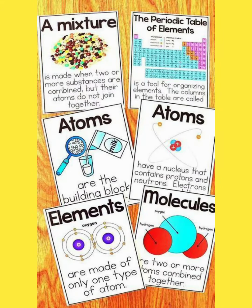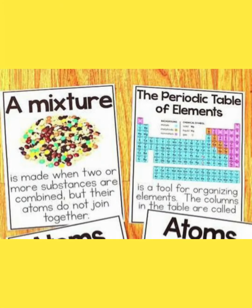Each and every matter is made up of 117 types of elements. The periodic table of elements is shown in the top right of this picture — these are the 117 elements set in a table. Compounds and mixtures are combinations of these 117 elements. The periodic table is a tool for organizing elements.